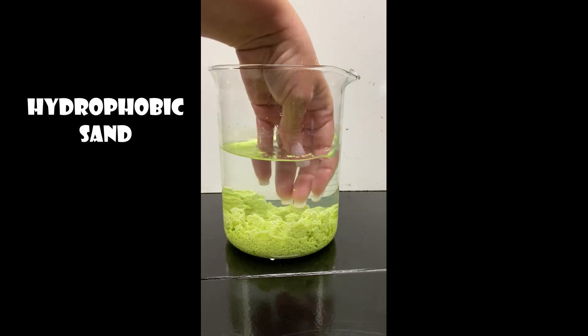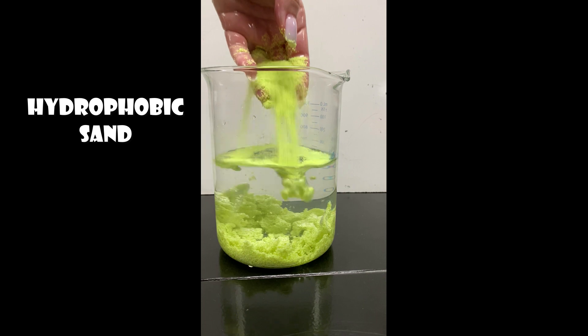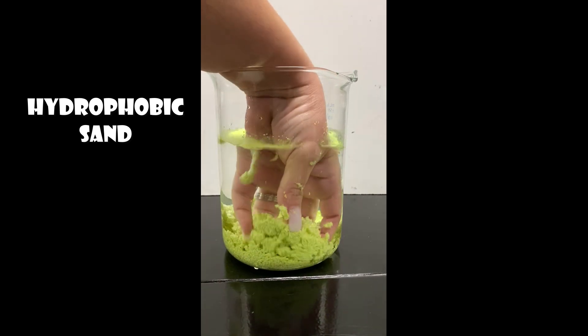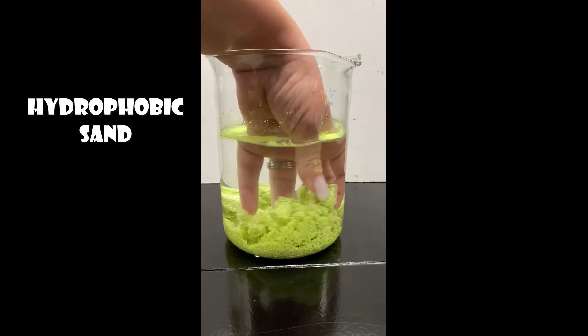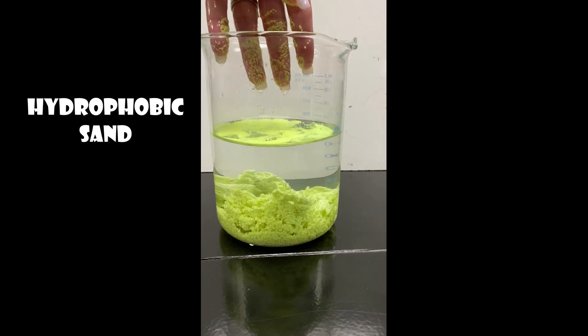So when we place it in water it will have a layer of bubbles around it. Those are just air bubbles so it will kind of look like a shimmering material and when you take it up out of the water it will just be dry sand again.